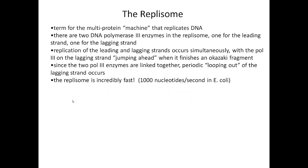To summarize, there's a whole large complex of proteins involved in DNA replication, sometimes called the replisome — like a big machine. It has two DNA polymerase enzymes, one for the leading strand and one for the lagging strand, plus all of those additional accessory proteins. Replication of the leading and lagging strands occurs at the same time. Somewhat surprisingly, those two DNA polymerase molecules are actually linked together — one going in one direction, one in the other. The lagging strand has to loop out during this process to make that possible.